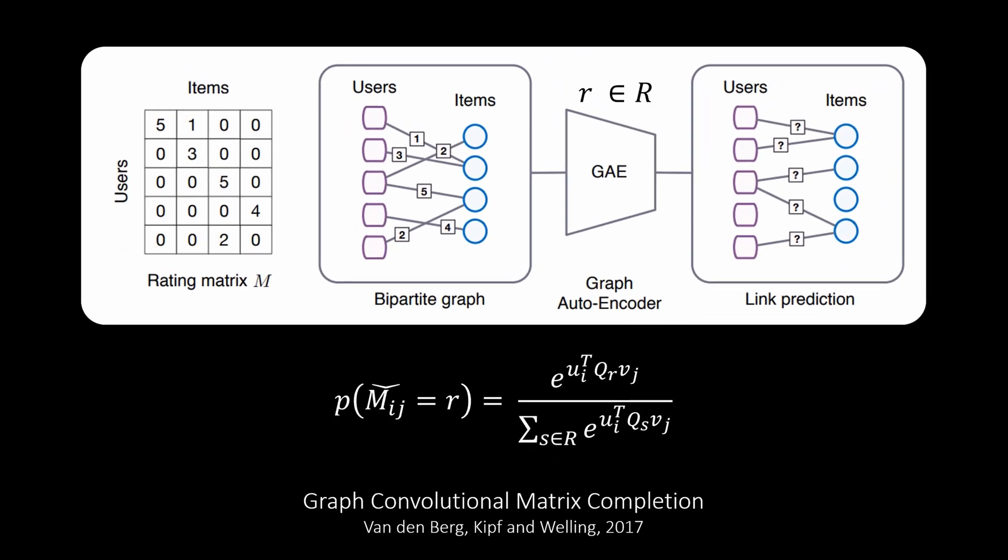In some sense, this is very similar to the matrix completion problem we've seen before. We learn some embeddings for the users and items, which were the latent codes previously, and use them in the end to predict the cells on the matrix. The big difference is the way how these embeddings are generated, which is based on message passing here.